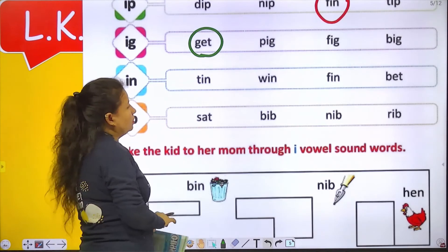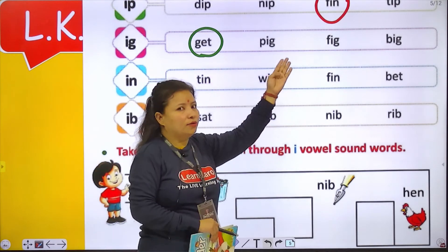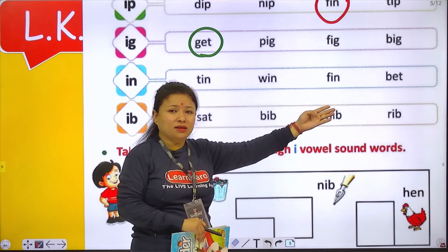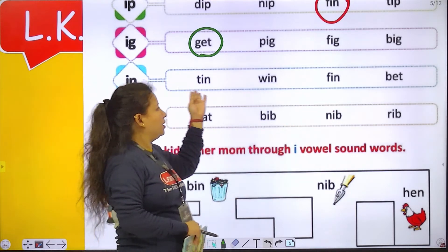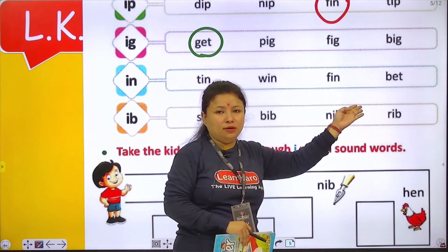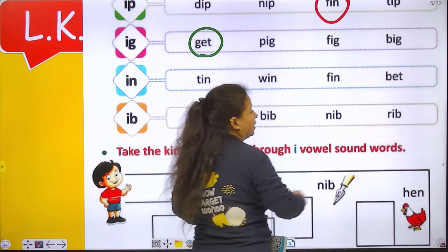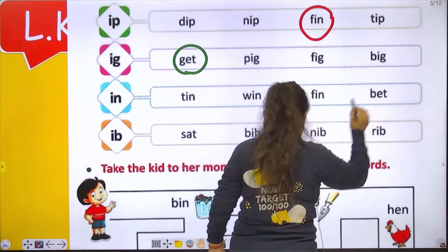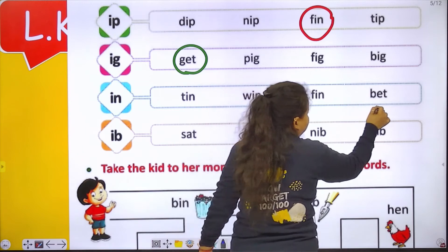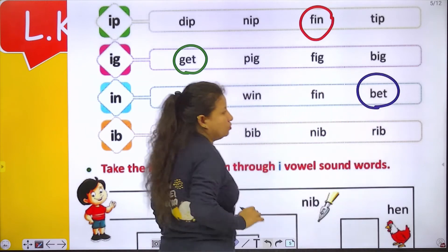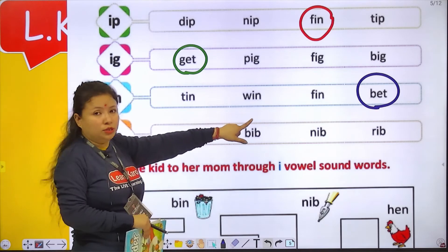In. So like in — tin, win, fin, bet — no, doesn't match. In, tin, pin, fin — these match. Bet is the odd one. Bet kya hai yaha par? Alag hai, different hai, inse match nahi ho raha hai. To hume bet ko circle karna hai.